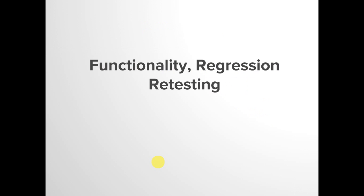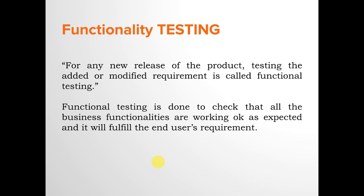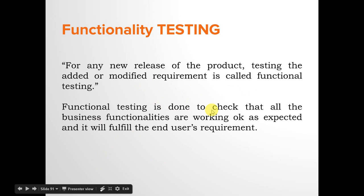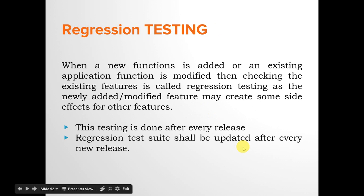Functionality testing means checking all new or modified features in the latest deployment. For any new release, testing the added or modified requirements is called functional testing — it ensures all business functionalities work as expected and fulfill the end user's requirements. Regression testing is done when a new function is added or an existing function is modified — it checks the existing old features to ensure the new changes have not created any side effects. Regression testing is done after every release, and the regression test suite should be updated accordingly.